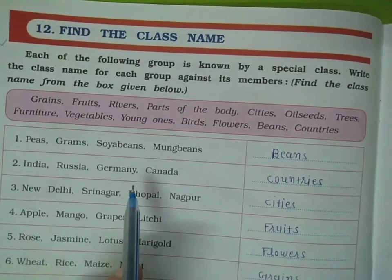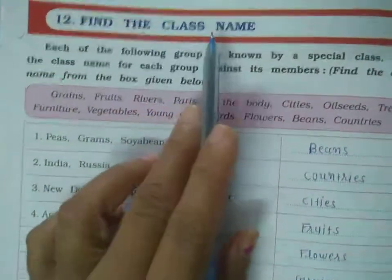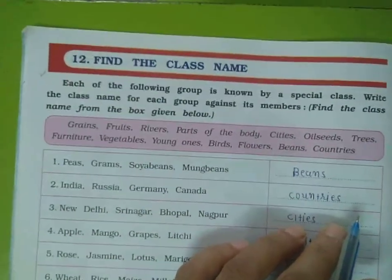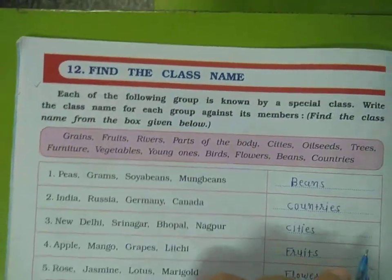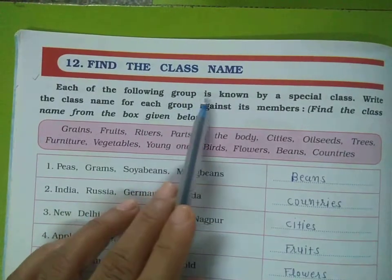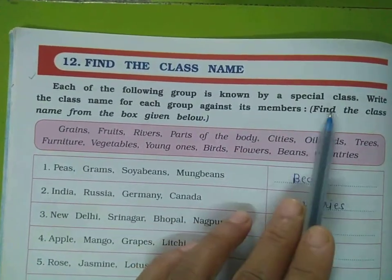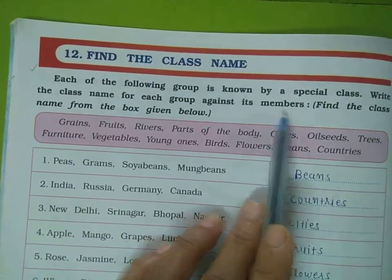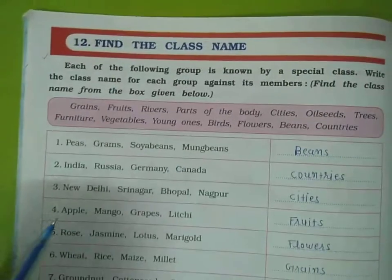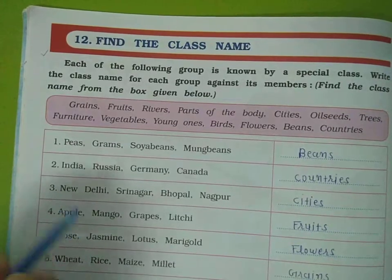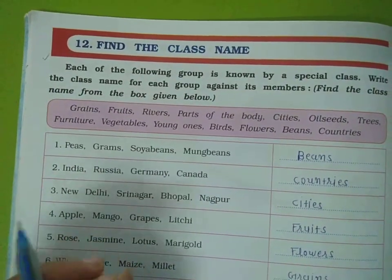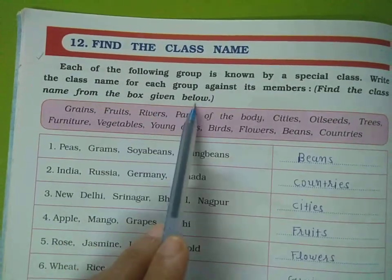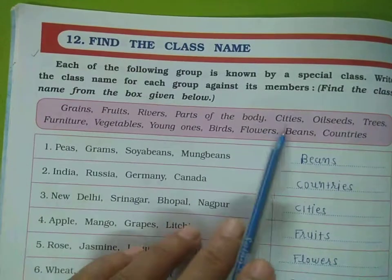Last period we finished chapter 11 and now we start chapter number 12. Find the class name — that means special class, i.e. group. Which group has a special name? Each of the following groups is known by a special class name. Write the class name for each group against its members. Find the class name from the box given below.